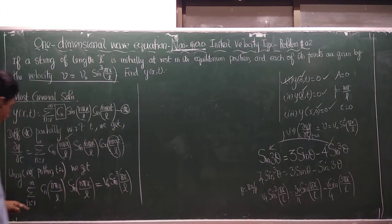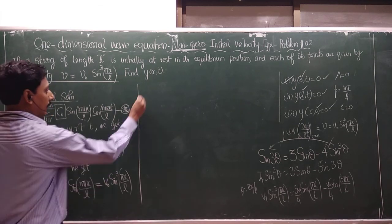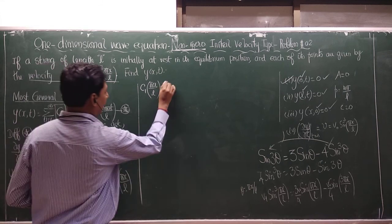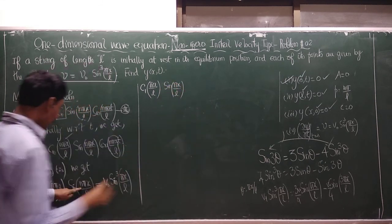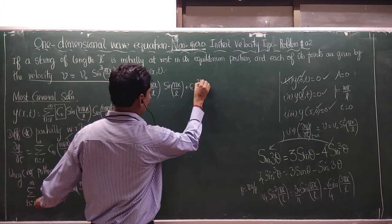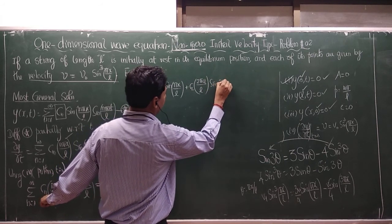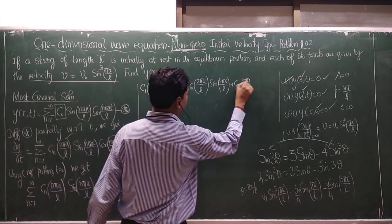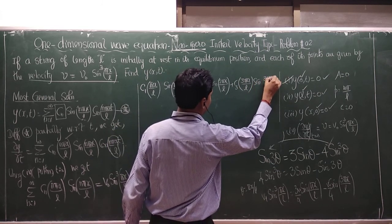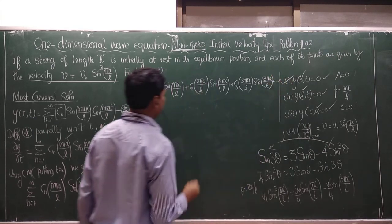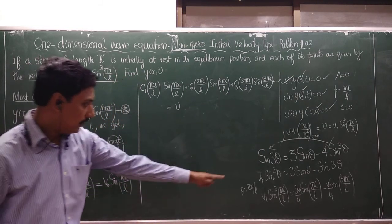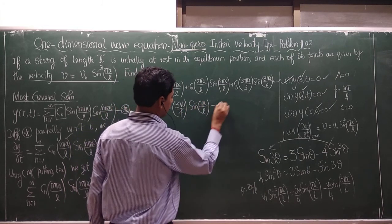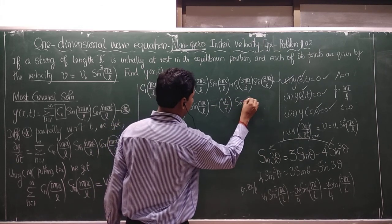Expanding the left-hand side summation for n = 1, 2, 3: for n=1 we get C₁·(πa/L)·sin(πx/L); for n=2 we get C₂·(2πa/L)·sin(2πx/L); for n=3 we get C₃·(3πa/L)·sin(3πx/L); plus higher terms up to infinity. The right-hand side is (3V₀/4) sin(πx/L) minus (V₀/4) sin(3πx/L).